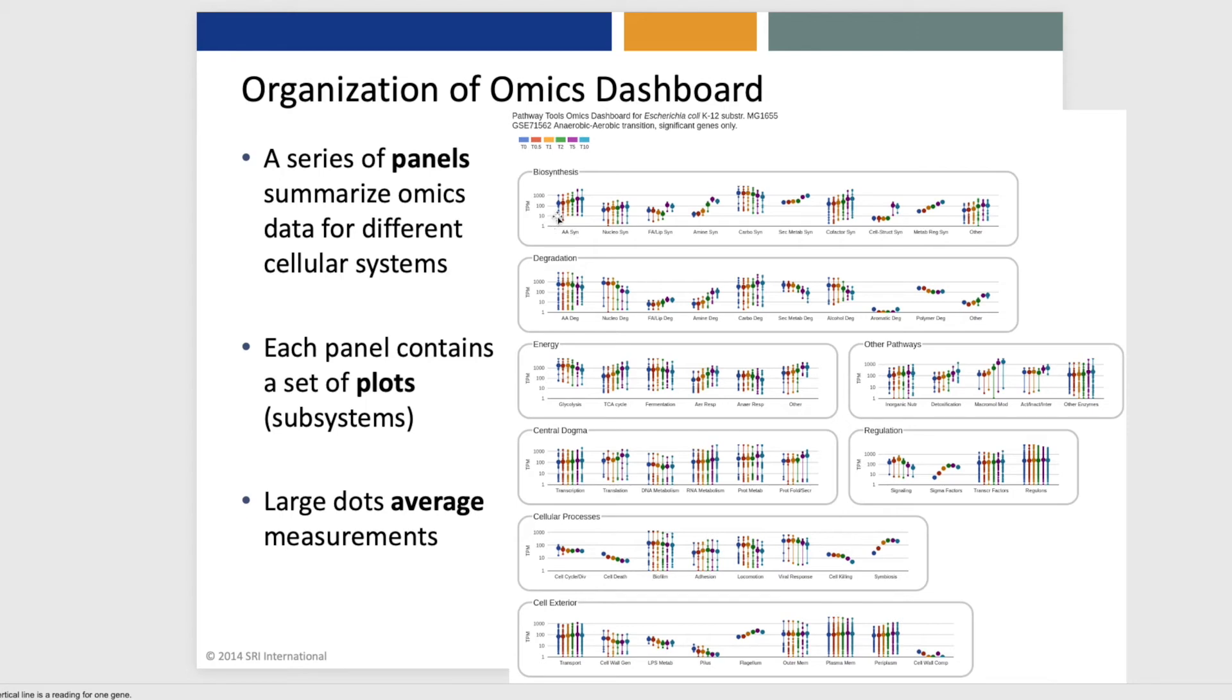And the fat dots average all of the genes at each of the time points, so that we can see that overall during this shift from anaerobic to aerobic growth, amino acid biosynthesis is going up.